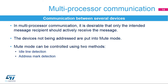To simplify communication between multiple processors, the USART supports a multiprocessor mode. In multiprocessor communication, it is desirable that only the intended message recipient should actively receive the message. The devices not being addressed are put into mute mode. The USART can enter or exit from mute mode using one of two methods: idle line detection and address mark detection.